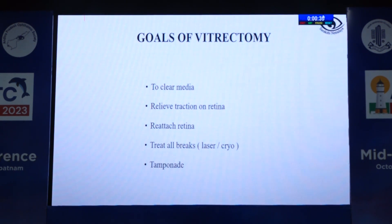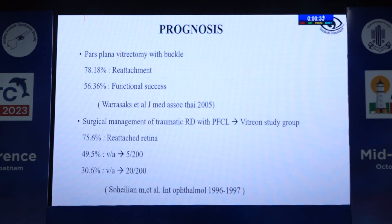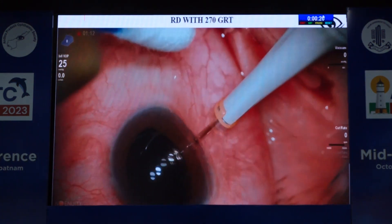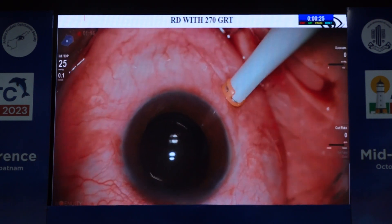The goals of surgery are to clear the media, directly relieve the traction pulling the retina, reattach the retina, and apply a tamponating agent. Prognosis is good with or without a buckle in such cases.